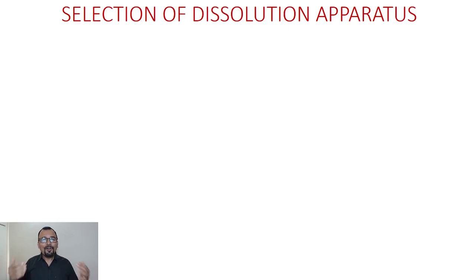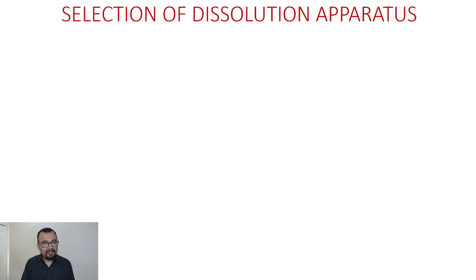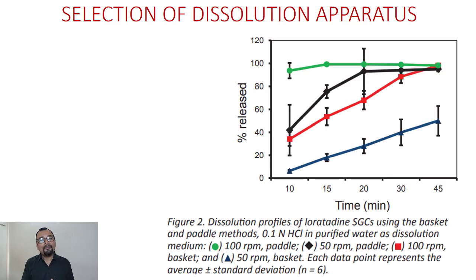Now let us understand the selection of dissolution apparatus. For immediate release dosage forms, scientists generally prefer to use either the basket (USP Apparatus 1) or the paddle (USP Apparatus 2). You need to conduct experiments using both and determine which one is suitable for your case. Here is the practical data on screen.